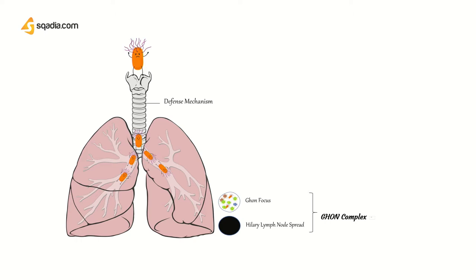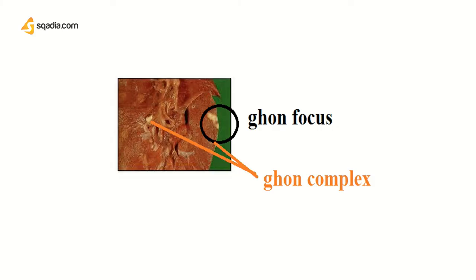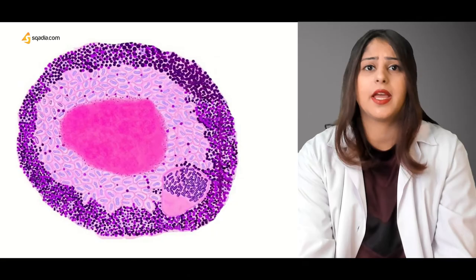The Ghon focus is present peripherally, whereas the Ghon complex is a combination of the Ghon focus as well as the necrosed mediastinal lymph node. We have discussed that the Ghon focus and Ghon complex are composed of granulomas.